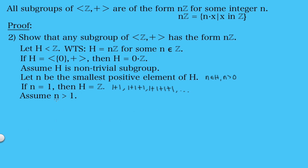Now let's look at the next case, where n is greater than 1. First we know that the integer multiples of n must be a subgroup of H. That's because we know that n is an element in H, which means that n plus n must be an element, n plus n plus n must be an element, and every multiple of n must be an element in our subgroup H. So that tells us this entire set of integer multiples of n is contained in our set H.